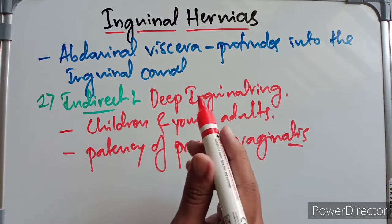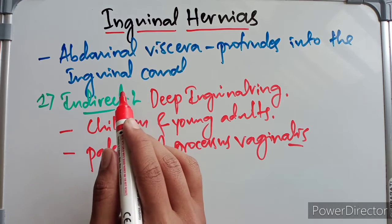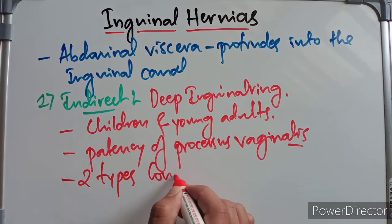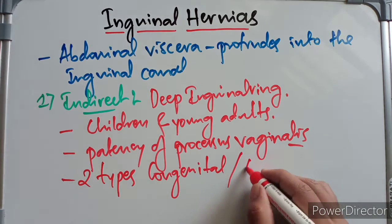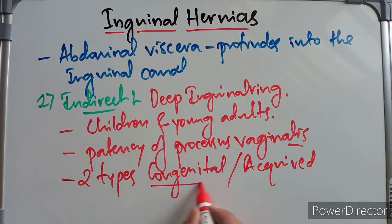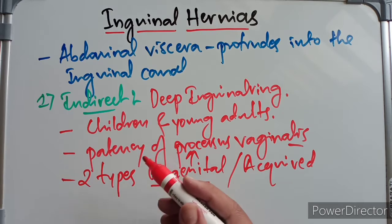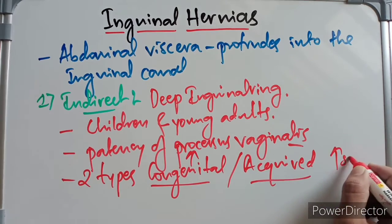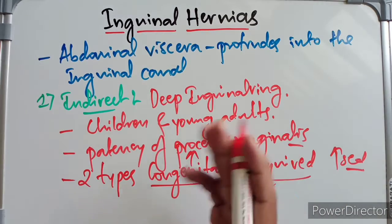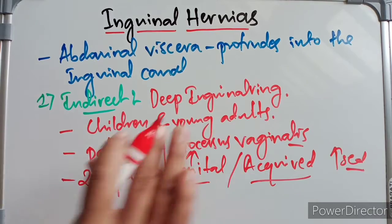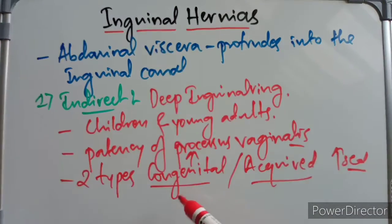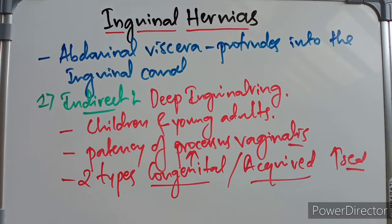There are two subtypes of indirect inguinal hernia: congenital and acquired. The congenital type occurs due to patency of the processus vaginalis, or outpouching of the peritoneum connected to the peritoneal cavity. The acquired type occurs due to increased intra-abdominal pressure — for example, from weight lifting — which pushes the abdominal contents through the deep inguinal ring into the inguinal canal.